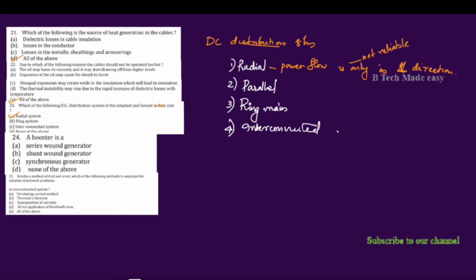For the parallel distribution system, the initial cost is high compared to the radial system.